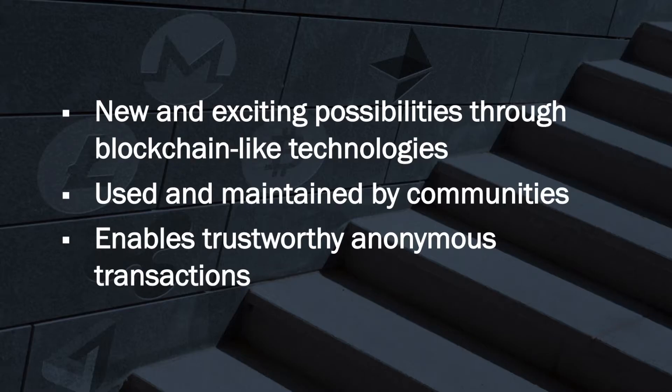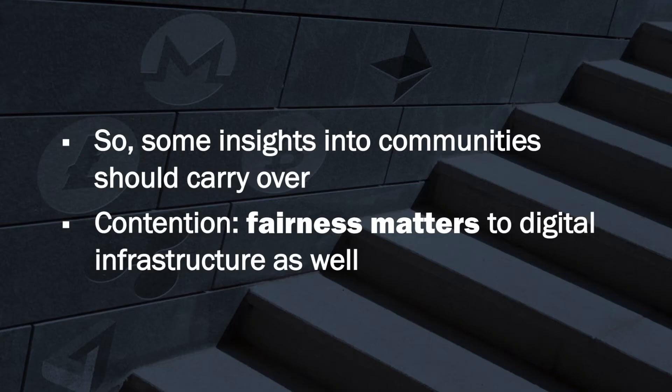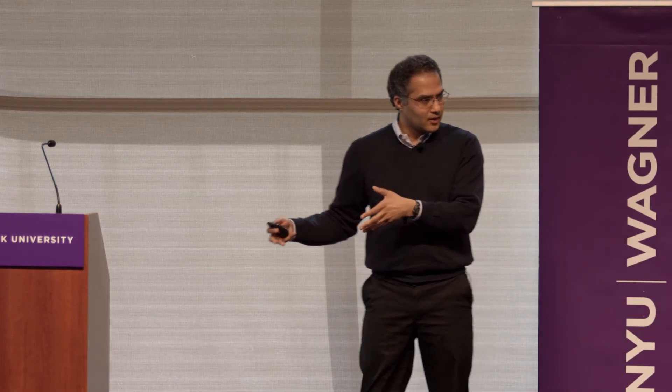Now let's look at the digital world. There are a lot of exciting possibilities through blockchain-like technologies — there's Monero, Ethereum, Bitcoin, Litecoin, and others. These technologies distribute information across different nodes and are all used and maintained by communities. They provide a service — enabling trustworthy, anonymous transactions. For example, a city in Vermont was the first to use this to verify property transactions. We would think that insights into communities from the physical world should carry over into the digital world, and my contention is that fairness matters to digital infrastructure as well.